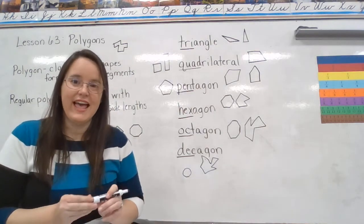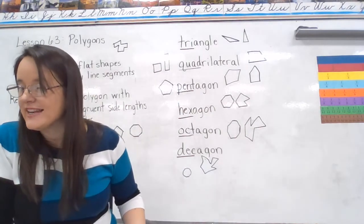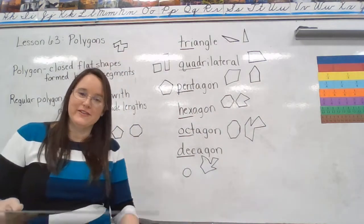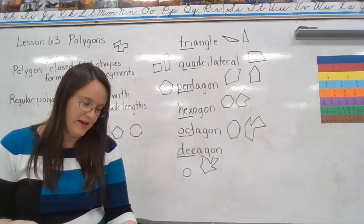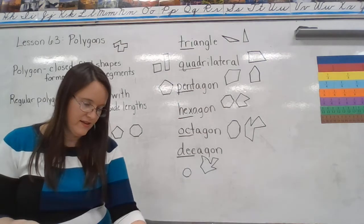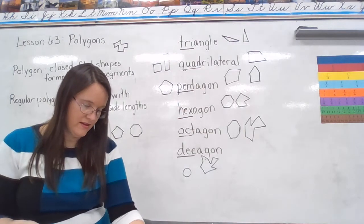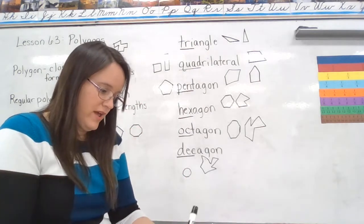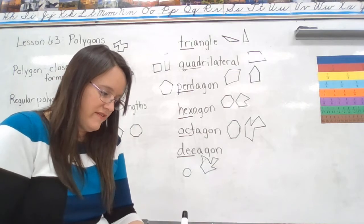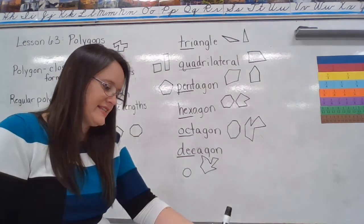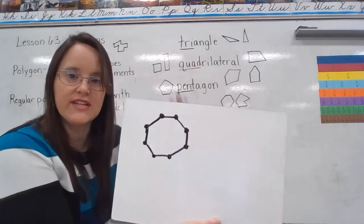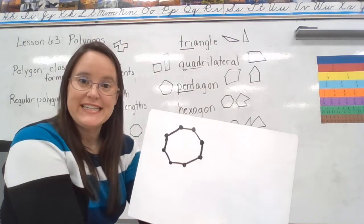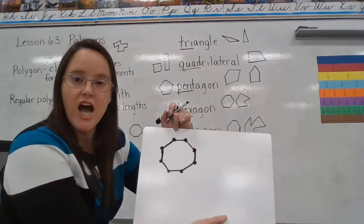An octagon has how many more vertices than a pentagon? Vertices — let's look at my octagon. The vertices are the corners. In an octagon, we have one, two, three, four, five, six, seven, eight of them. Those are the vertices where the two sides meet. It's called a vertex if we're talking about one of them, vertices if we're talking about more than one.